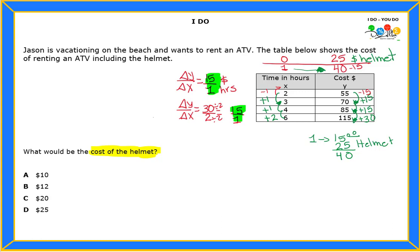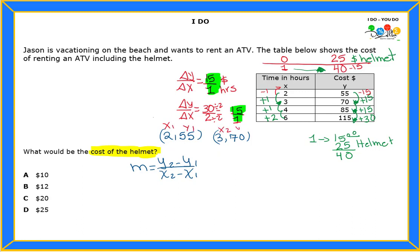Next, I'm actually going to work it out algebraically. I need to find my slope, which is: (Y₂ − Y₁) over (X₂ − X₁). I'm going to choose two points: (2, 55) and (3, 70). The first point is X₁ and Y₁, the second point is X₂ and Y₂. I'm going to circle the Y values because those are the values that will go in the numerator.